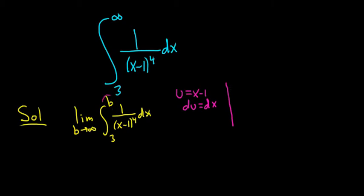So let's see. Let's do the top one first. When x is equal to b, then we take the b and plug it into u. So it would be u is equal to b minus 1. And then when x is equal to 3, that's the bottom limit of integration, the lower limit, u is equal to 3 minus 1. So u is equal to 2. So these here are going to be our new limits of integration.